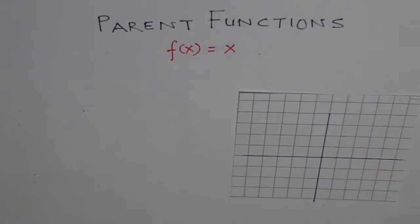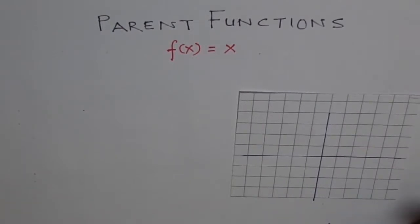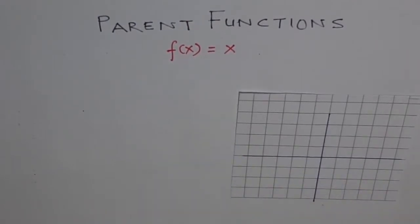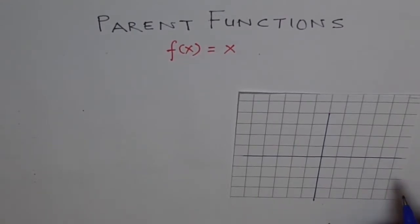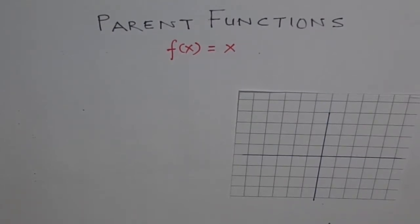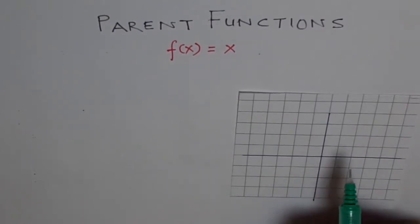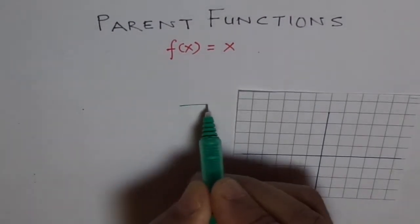Now these parent functions will be dealt in different videos. This video is specifically on the straight line f(x) equals to x. Well you know a lot about it. Let's draw a simple line and then see. First thing is about parent function: which are the critical points which we should take to draw our function. So let me take those critical points with you first.